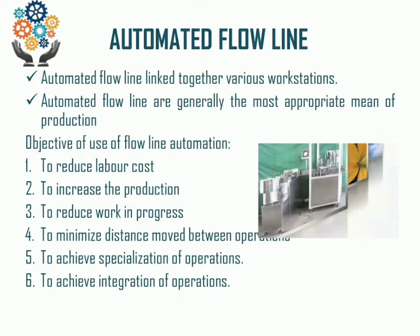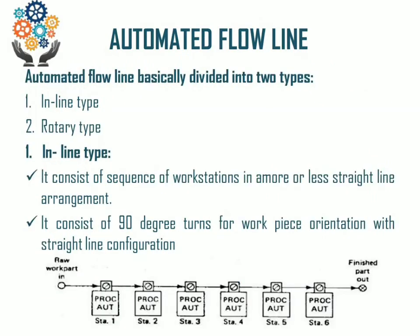Automated Flow Lines basically divide into two types: inline type and rotary type. The inline type consists of a sequence of work stations in a more or less straight-line arrangement.